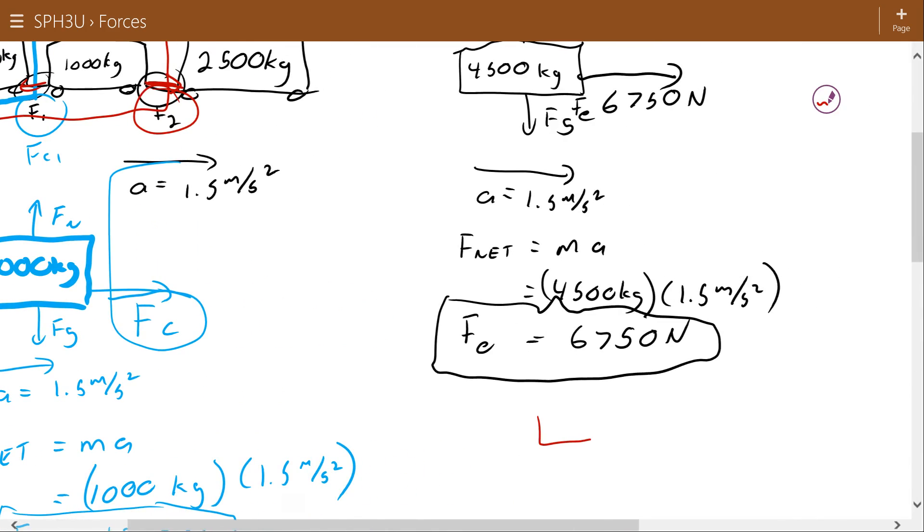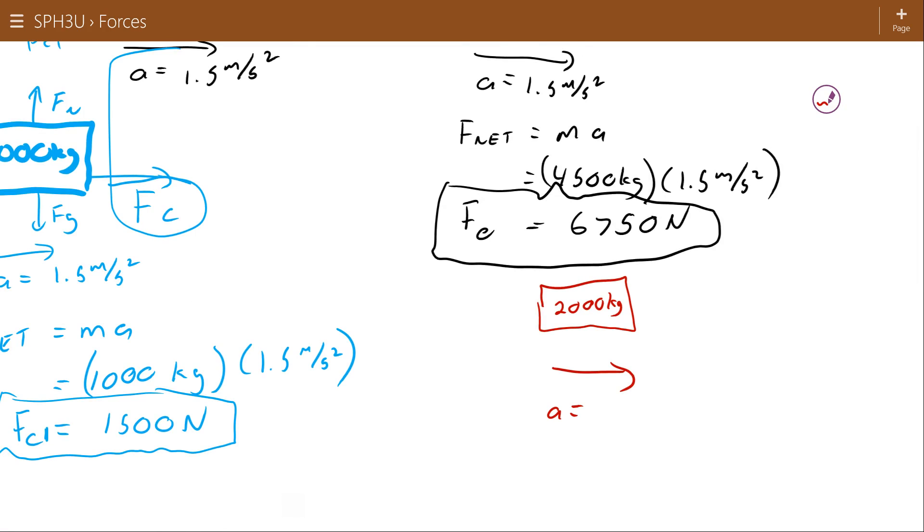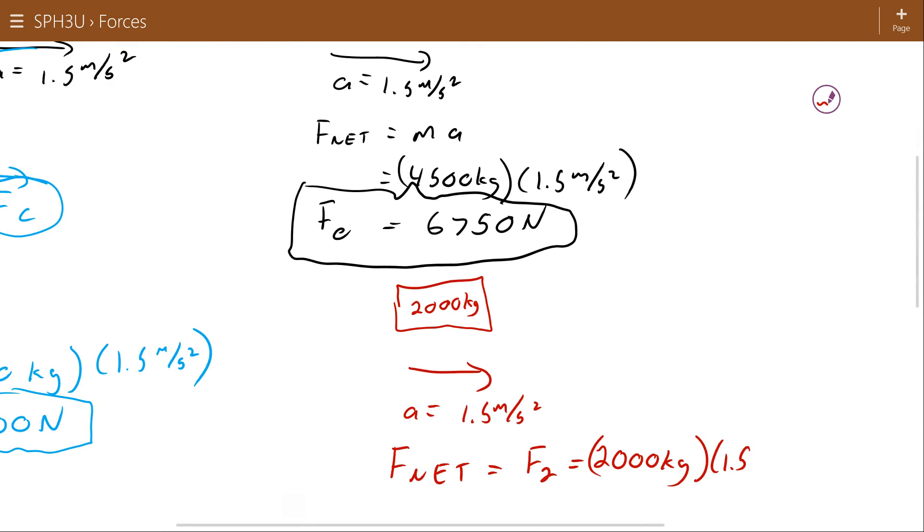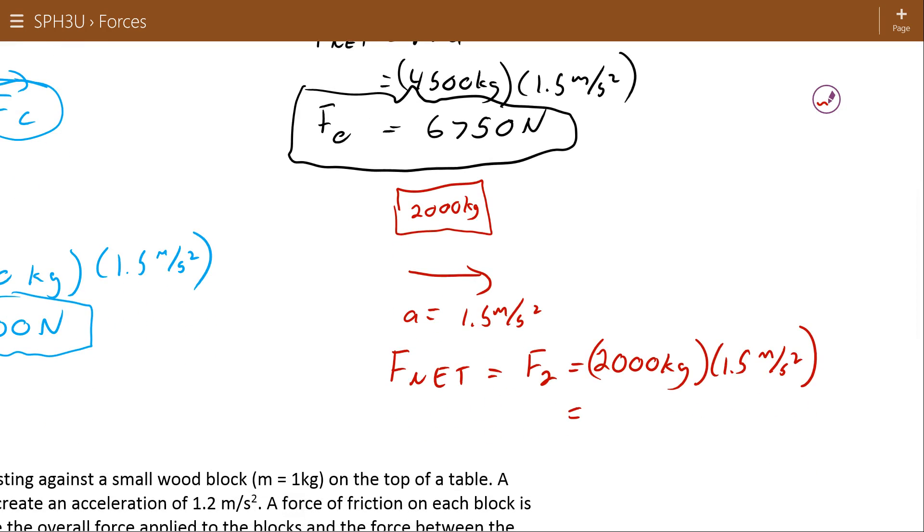This time, my total object has a mass of 2,000 kilograms, 1,000 plus 1,000. Again, they're all accelerating together at 1.5 meters per second squared. So my net force, which is F2, is going to be equal to 2,000 kilograms times 1.5 meters per second squared, or 3,000 newtons.